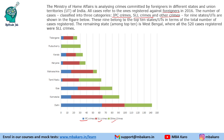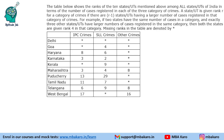The data for nine states and union territories are shown in the figure, and these nine belong to the top ten states in terms of total number of cases registered. The remaining state among the top ten is West Bengal, where all 520 cases registered were SLL crimes. This is important information because one of the questions is based on it and it is not presented in the graph. So 520 SLL cases in West Bengal — we need to use this information along with a table to find the answers.